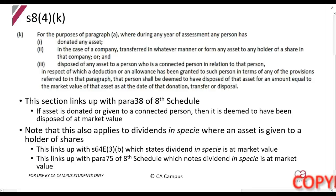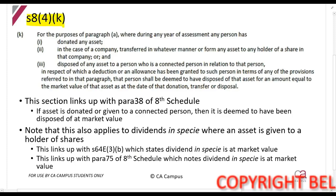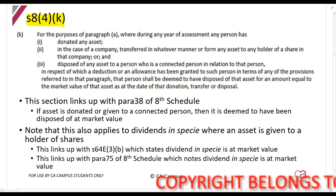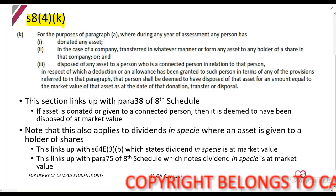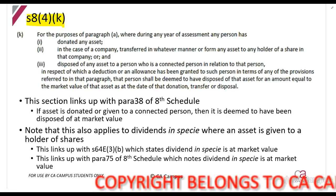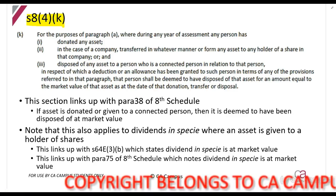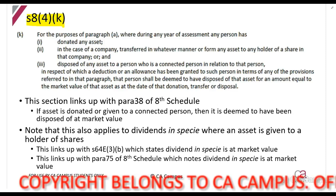We are now looking at section 8.4k. Basically what section 8.4k does is: this section applies if you made a donation to someone, or if you gave a shareholder a dividend in specie, or if you sold it to a connected person. What they then tell you is that you must treat it as if you sold it at market value.